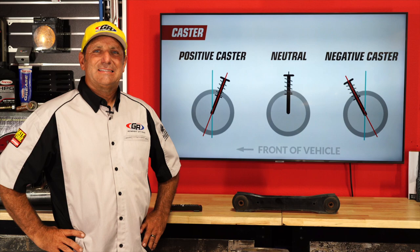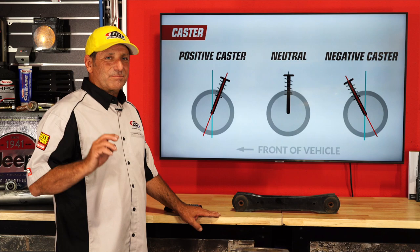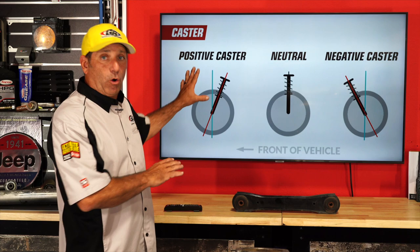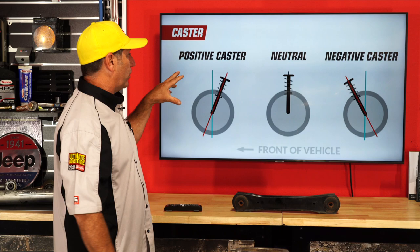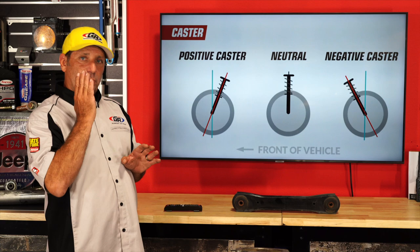The other thing that could cause handling issues is bump steer, which we've covered in a previous episode. If your track bar and drag link are not the correct length and in line, every time you go over a bump you're going to be chasing that thing. You've got to have those three things correct — caster, toe, and bump steer — and that's what's going to allow your Jeep to drive nicely down the road just like it did when it was stock.